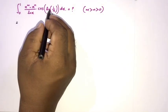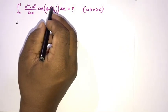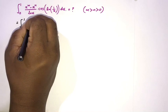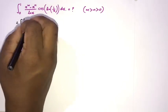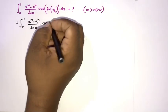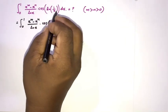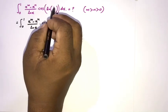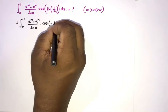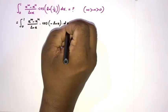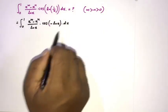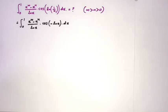First, we simplify natural log of 1 over x. We rewrite the integral from 0 to 1 as x to the m minus x to the n, over natural log of x times cosine of minus natural log of x, dx. Here we use the fact that 1 over x equals x to the minus 1, so natural log of 1 over x equals minus natural log of x.